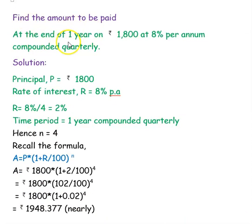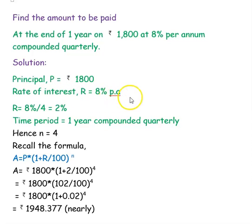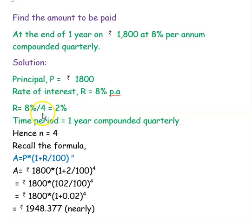Next question: find the amount to be paid at the end of 1 year on Rs. 1,800 at 8% per annum compounded quarterly. Given: principal Rs. 1,800, rate of interest 8% per annum for 1 year, and it is compounded quarterly. Quarterly means 4, so the rate of interest will be reduced by 4: 8% divided by 4 equals 2%. And the time period 1 year compounded quarterly means N will be multiplied by 4, so N becomes 4.